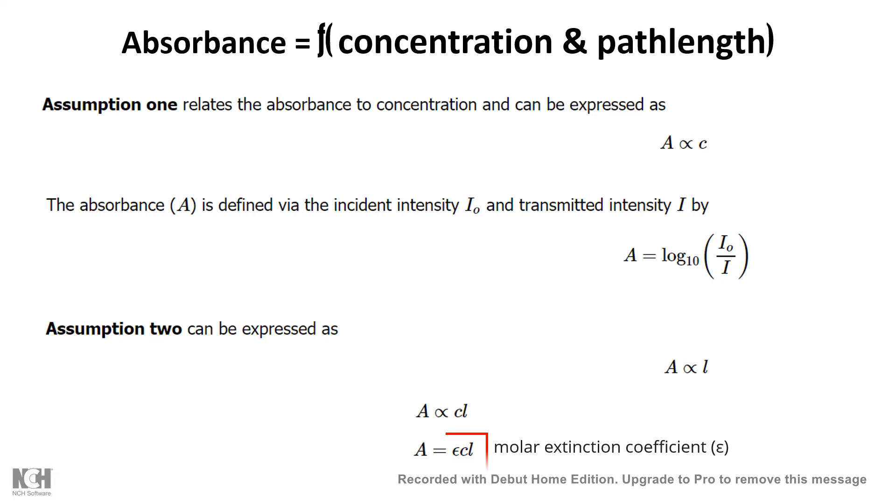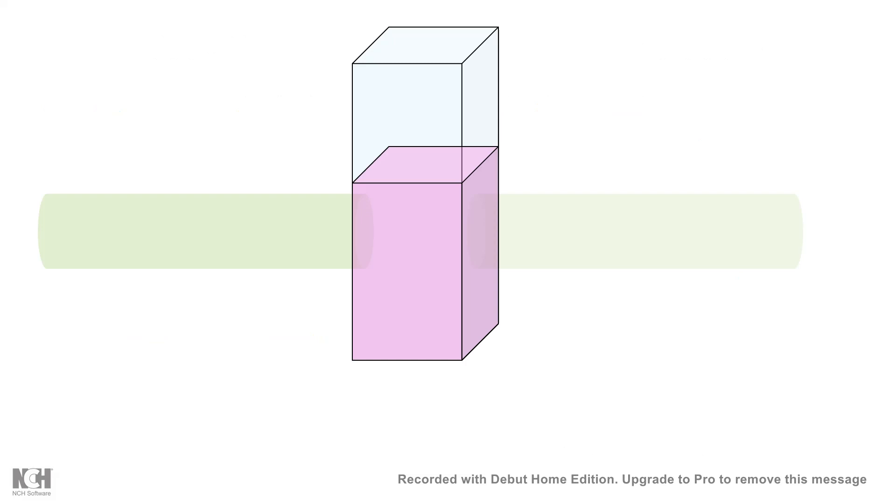So let's try to understand how this works. So imagine we have a cuvette and we have incident light and light is passing through it, and we took a small part of this cuvette where there is a small amount of sample of small length.